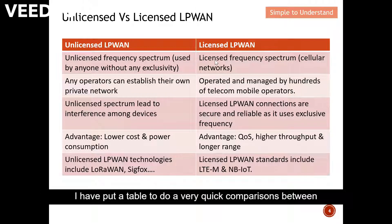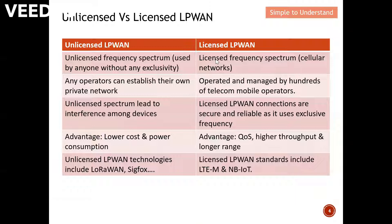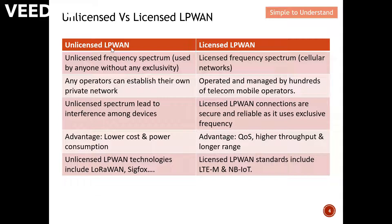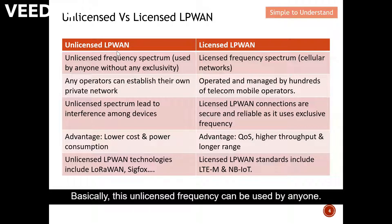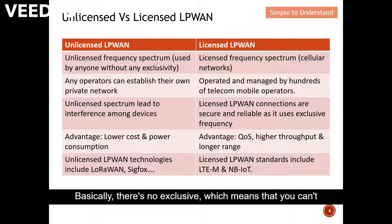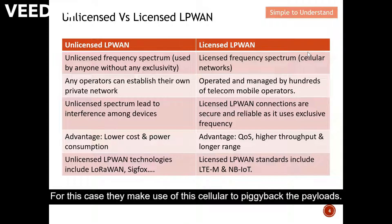I have put a table to do a quick comparison between licensed LPWAN and unlicensed LPWAN. Unlicensed LPWAN uses unlicensed frequency to transmit — this frequency can be used by anyone, meaning you can't stop people from using it. Licensed LPWAN, on the other hand, uses licensed frequency to transmit and needs to use the cellular network to piggyback the payload.